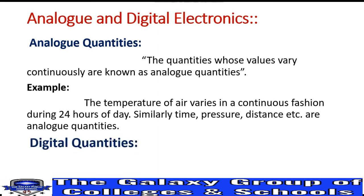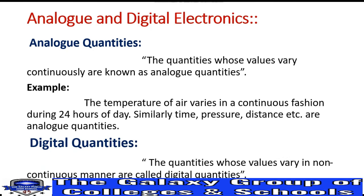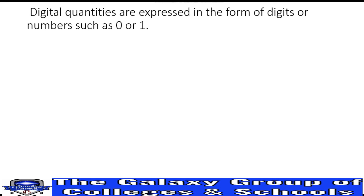What are Digital Quantities? Digital quantities are those whose values vary in a non-continuous manner. In analog quantities, values change in a continuous manner, but in digital quantities, values change in a non-continuous manner — sometimes high and sometimes low. Digital quantities are expressed in the form of digits, such as 0 and 1. In digital quantities, we use only two numbers: 0 and 1.